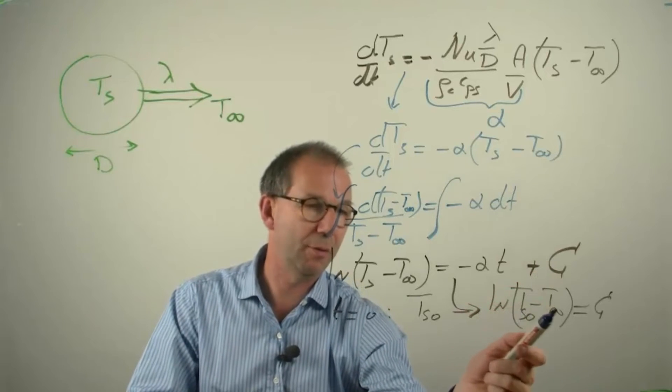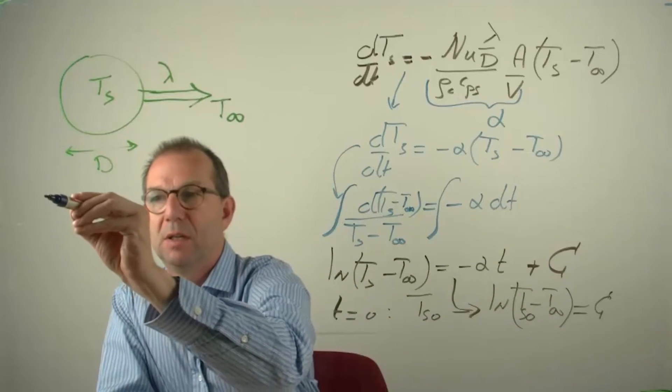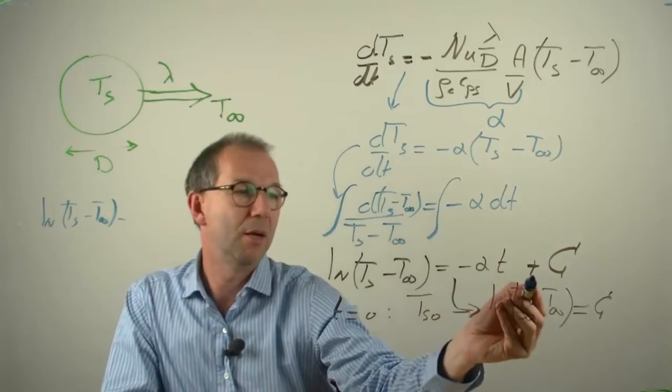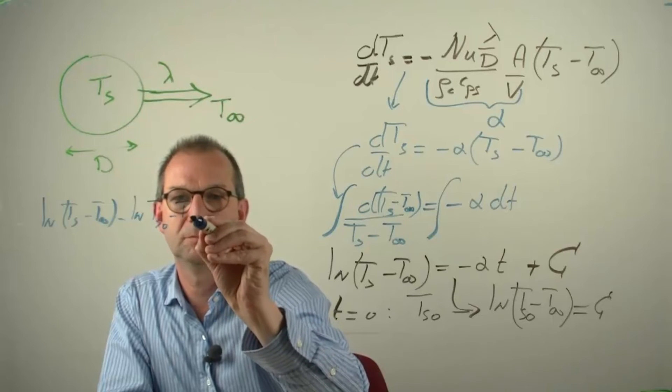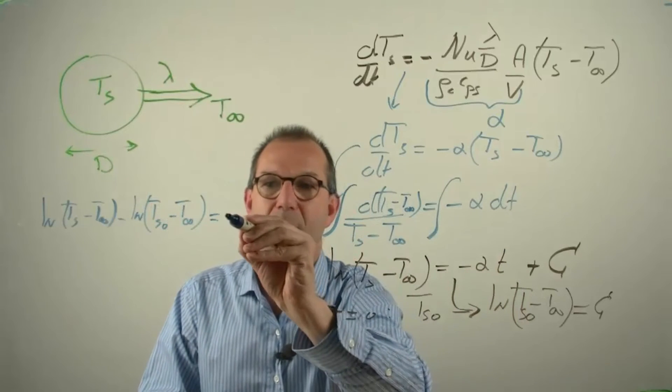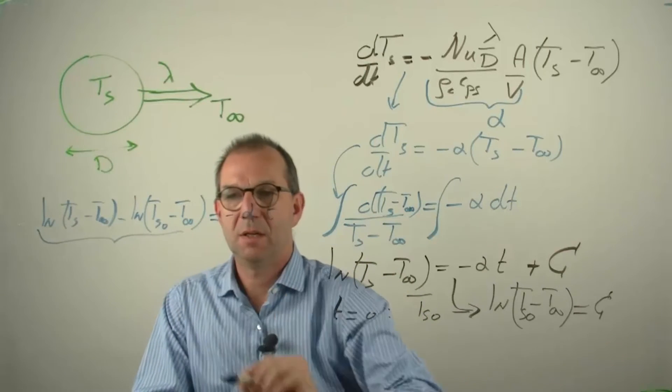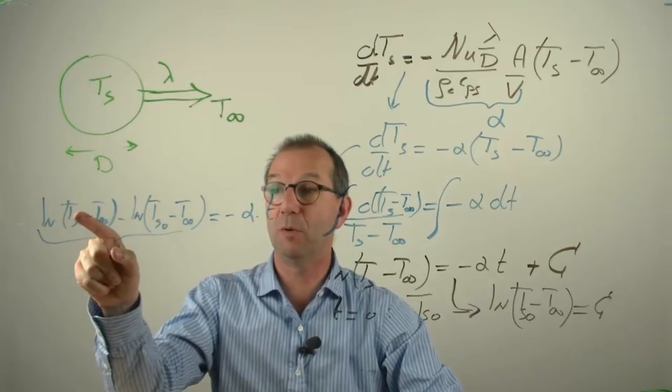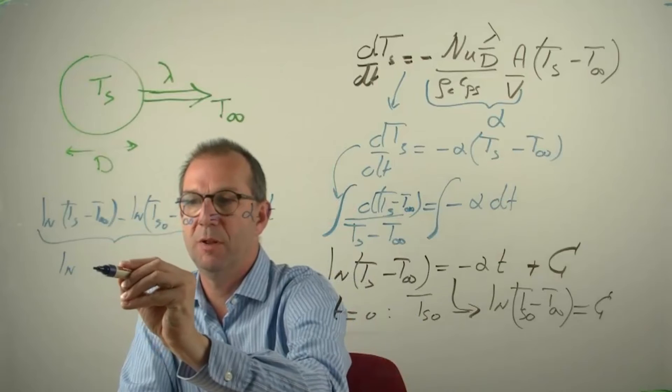I continue again in blue so that you can see the different steps. Rather than writing C, I write the logarithm of this initial difference. Rather than writing it on the right hand side, I move it to the left hand side. And that gives me the logarithm of the unknown temperature corrected for that far away minus my constant. And that equals what is left over here minus alpha the constant times T. Now these two can be easily grouped together. Logarithm of A minus logarithm of B is the same as the logarithm of the ratio A over B. So this can be written as the logarithm of the ratio.